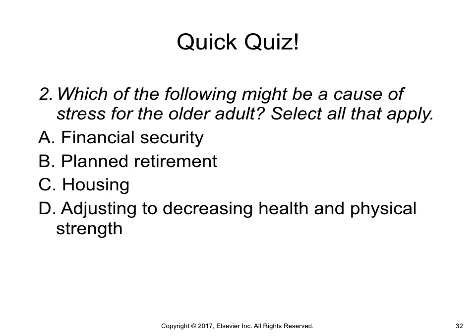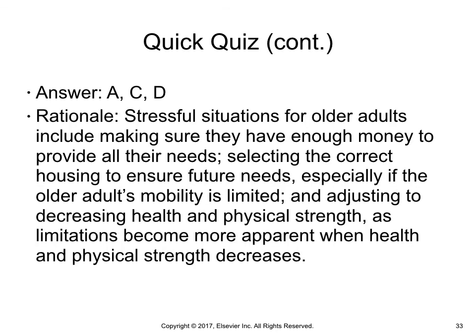Time for a quick quiz. Which of the following might be a cause of stress for the older adult? Select all that apply. A. Financial security. B. Planned retirement. C. Housing. D. Adjusting to decreasing health and physical strength. The answers are A, C, and D. Stressful situations for older adults include making sure they have enough money to provide for all their needs, selecting the correct housing to ensure future needs — especially if the older adult's mobility is limited — and adjusting to decreasing health and physical strength.